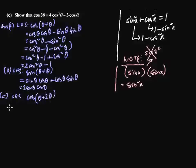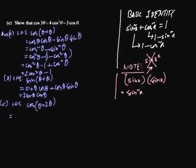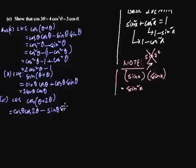We can write cos 3 theta as cos(theta plus 2 theta), and from the identity cos(a+b) equals cos a cos b minus sin a sin b, we write cos theta cos 2 theta minus sine theta sine 2 theta. Notice we cannot just multiply and write cos squared because the angles are different — cos theta and cos 2 theta are completely different entities.